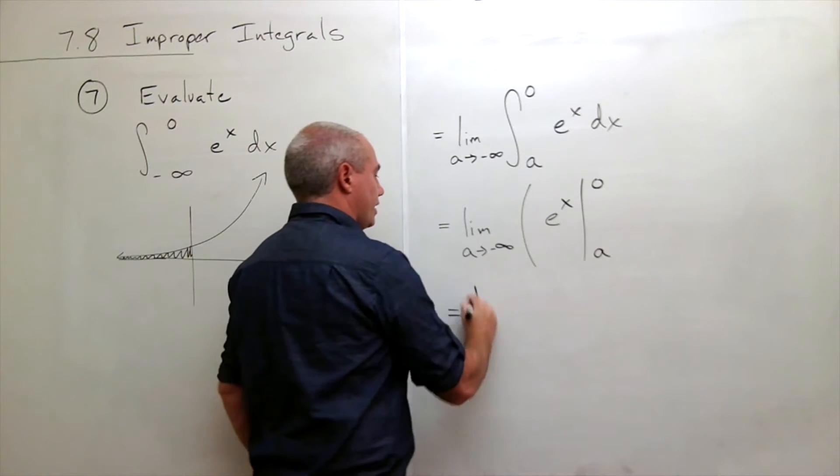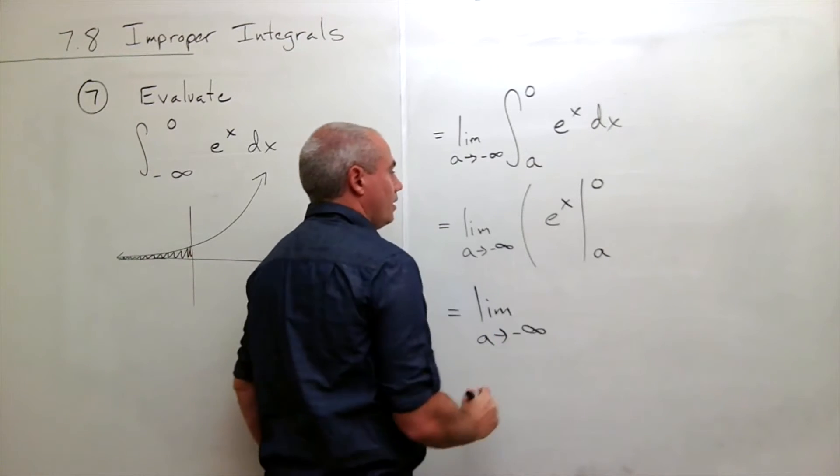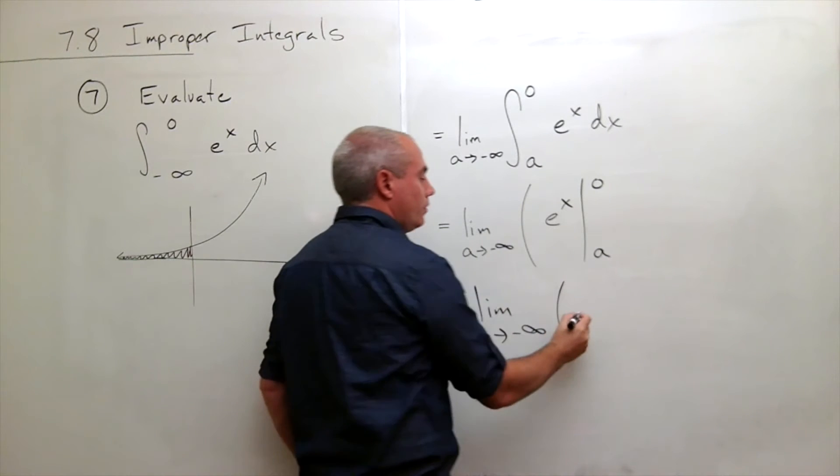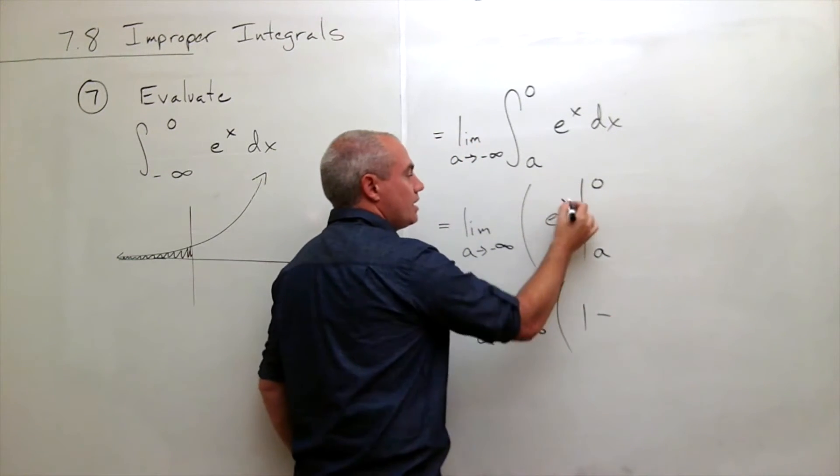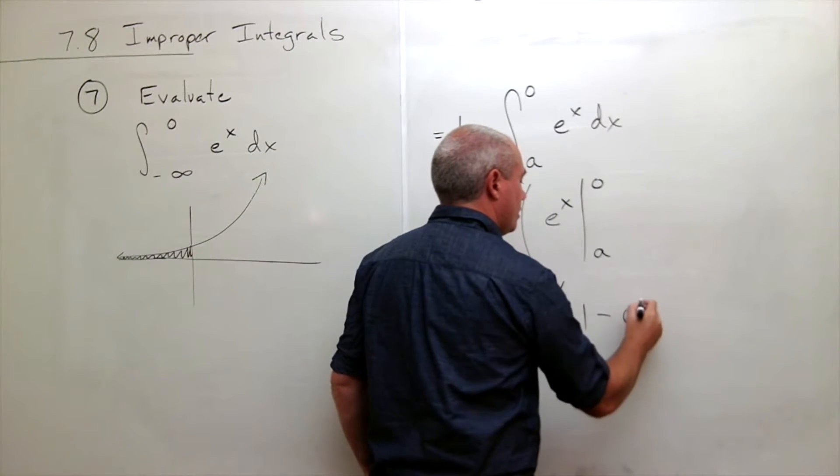Alright, I plug things in and I get the limit as a goes to negative infinity of, if I plug in zero here, I get e to the zero, which we know is one, minus e to the a.